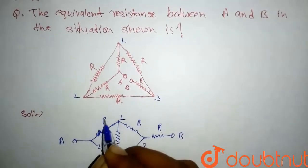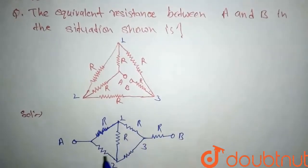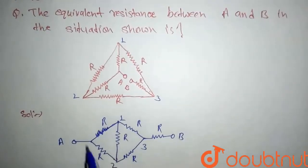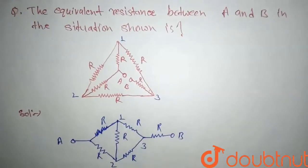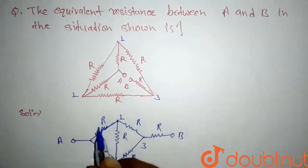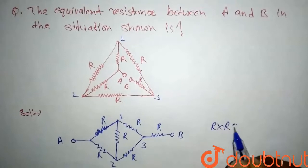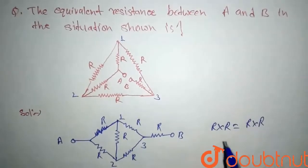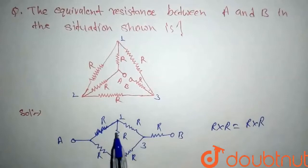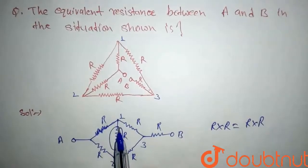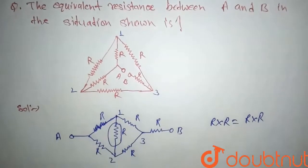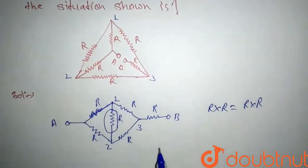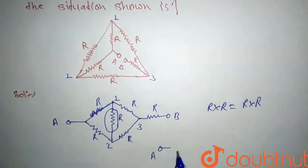By inspection, we can see a Wheatstone bridge configuration. Checking the balancing condition: R × R equals R × R, so the products are equal. This means no current flows through the middle branch, so we can remove that branch and redraw the simplified diagram.